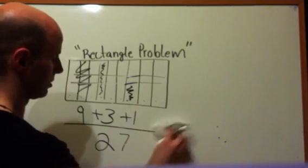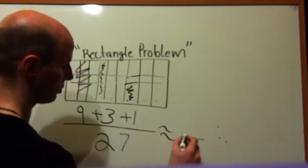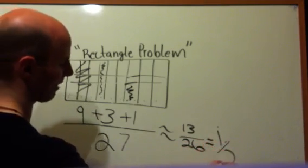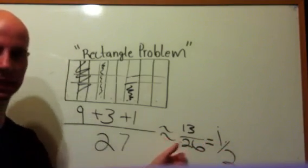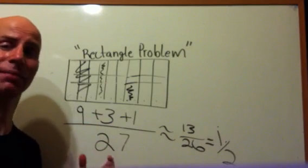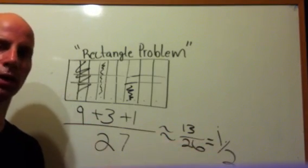this is approximately equal to 13 out of 26. Not exactly, which is equal to one-half. And that's important that you make that distinction. That 13 out of 27, it's not exactly, but it approximately is 13 out of 26, which would equal one-half.